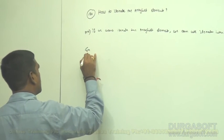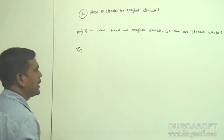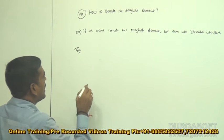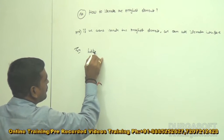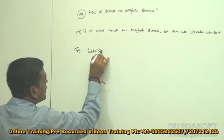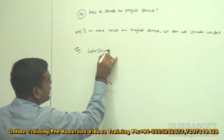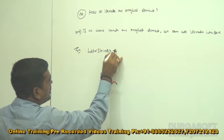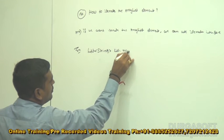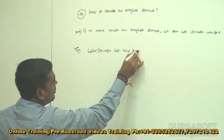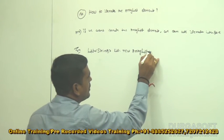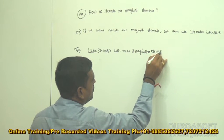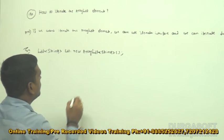For example, take one list first. Here I am going to take one list: List<String> is equal to new ArrayList<String>.